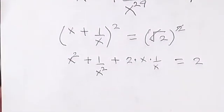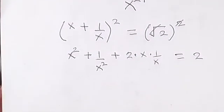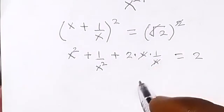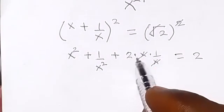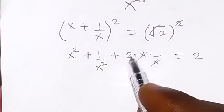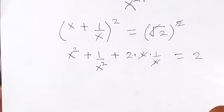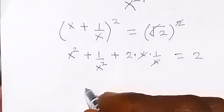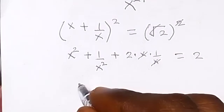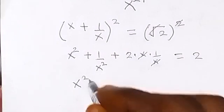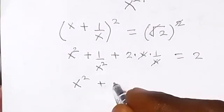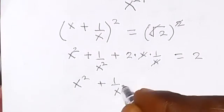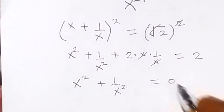We can see that x cancels x since they are multiplying, and we take the 2 to this side: 2 minus 2 equals 0. So we have x squared plus 1 over x squared equals 0.